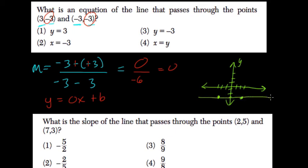So the slope is 0, this horizontal line, where y is always equal to negative 3. So the y-intercept is negative 3 as well. So y equals 0x plus b, or y equals 0 plus negative 3, or just negative 3. So y equals negative 3, which is choice 3.